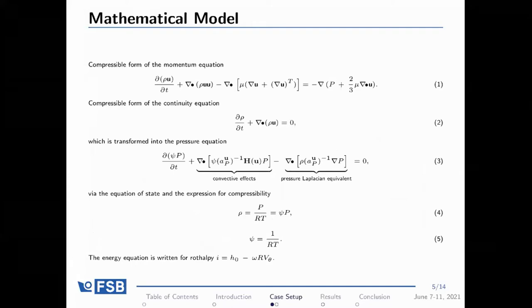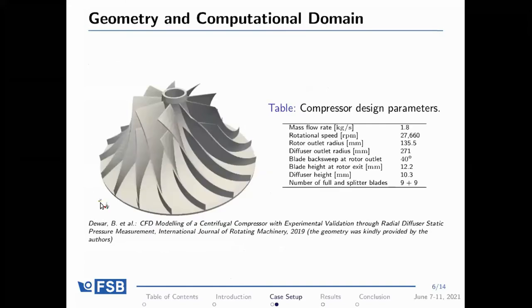Surge can be aerodynamically described as stalling or recirculation in all blade passages, and is quite dangerous as it can even cause reversed flow in the compressor. Choke is characterized by maximum velocity in the blade passage — a Mach number equal to unity — where no more mass flow rate can be pushed through. The energy equation for turbomachinery is written with a term called rothalpy, which includes both enthalpy and a rotational energy component.